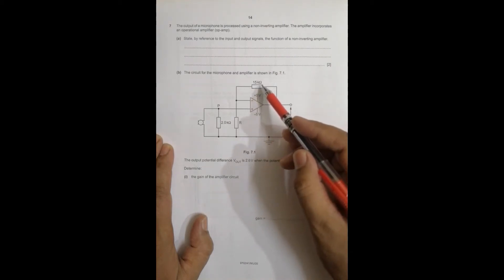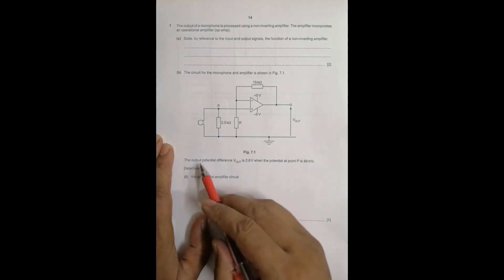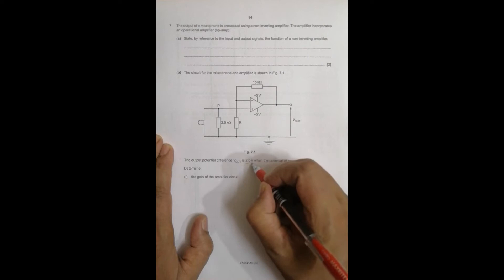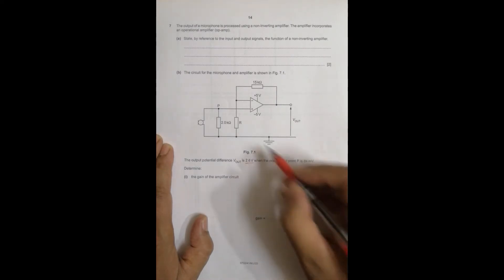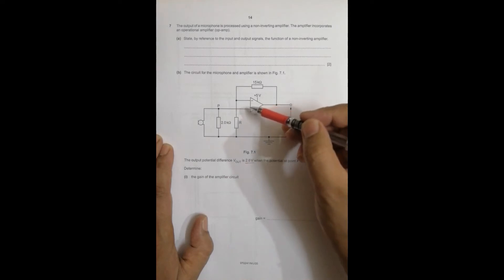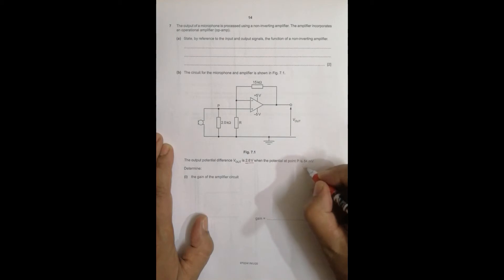This 15k ohm and RF forms some sort of a voltage divider. The output potential difference V out is 2.6 volt when the pressure at point P is this. So this is the input because it is the voltage between this plus and the ground. So this is the input voltage, this is V in.